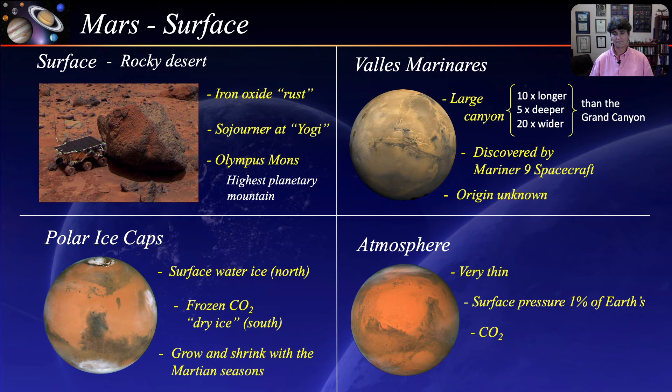The thin atmosphere makes for a very cold average surface temperature. To paraphrase Goldilocks: Venus is too hot, Mars is too cold, and Earth is just right.